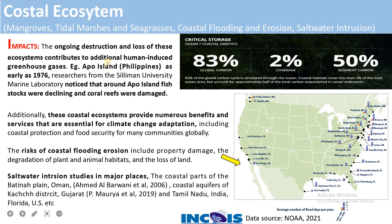What kind of effects do we see when the coastal ecosystem gets damaged? The ongoing destruction and loss of these ecosystems contributes to additional human-industry greenhouse gases. Whenever we destroy this coastal system for man-made purposes, there are no sinks for the absorption of excess carbon we release into the atmosphere, thereby causing further warming.